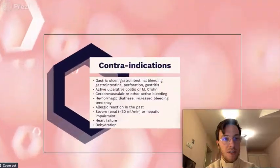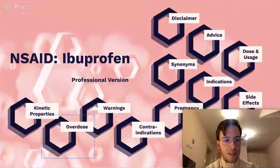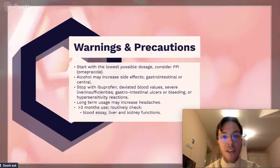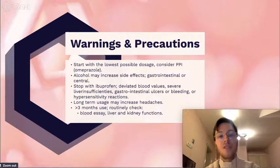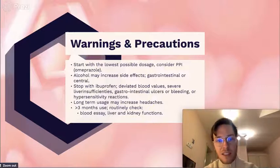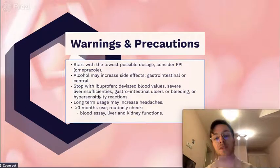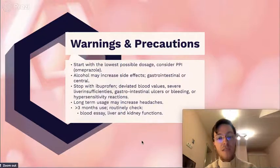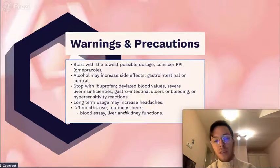Some warnings and precautions: start with the lowest doses possible. Consider a proton pump inhibitor, mostly for elderly patients. Alcohol may increase the side effects, especially gastrointestinal ones. Stop ibuprofen when you have deviated blood values, severe liver insufficiency, ulcers, bleedings, or hypersensitive reactions. For long-term use, it may increase headaches. And if used for more than three months, you should routinely check blood assay, liver, and kidney functions.